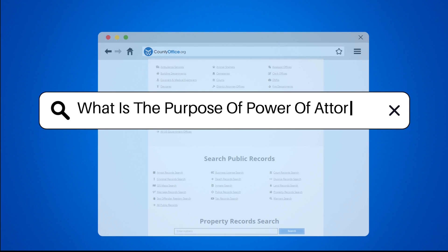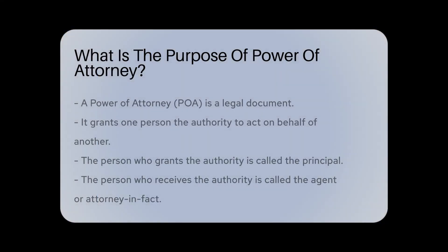What is the purpose of Power of Attorney? A Power of Attorney, or POA, is a legal document that grants one person the authority to act on behalf of another. The person who grants the authority is called the principal. The person who receives the authority is called the agent or attorney-in-fact. A POA can be broad or limited in scope.